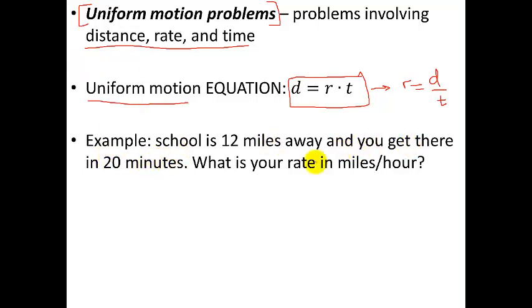School is 12 miles away, and you get there in 20 minutes. What is your rate in miles per hour? So we take this equation, distance equals rate times time. We're asking for the rate, so we want to solve this for r. We divide both sides by t, and we get that the rate is the distance divided by time.